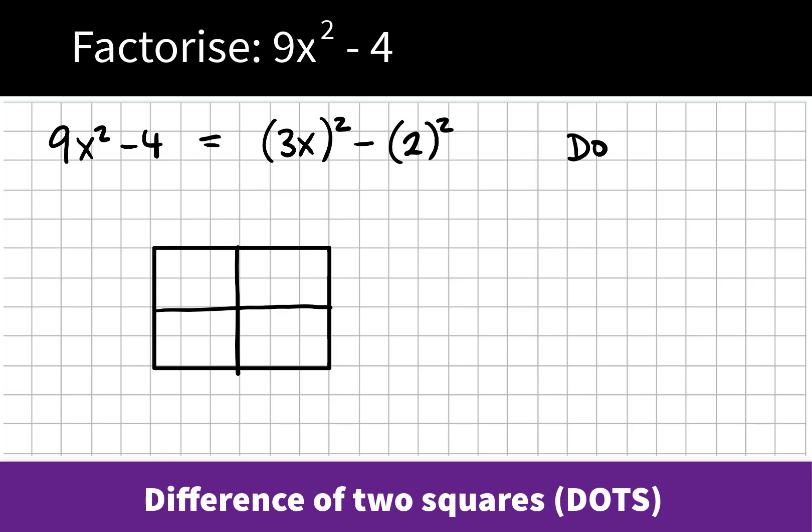We know that the answer to this difference of two squares type question would be the two things that are being squared with a plus or minus between them. It would be 3x minus 2 by 3x plus 2. And when we're familiar with them, it would be okay to write out the answer like this.